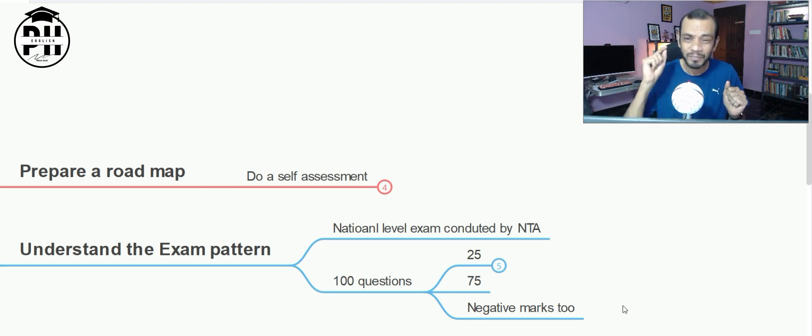Students who write face one problem - time. In three hours you have to answer hundred questions with negative marks. That means you will only get 72 seconds to answer a question - one minute and 12 seconds. So you have to be that much fast and focused for three hours to win this.